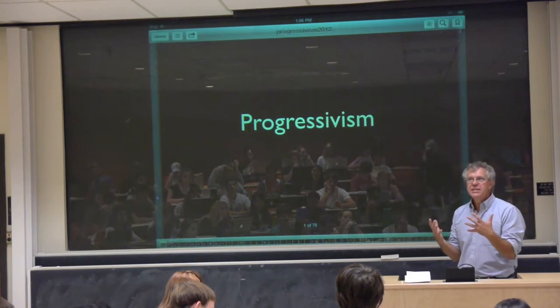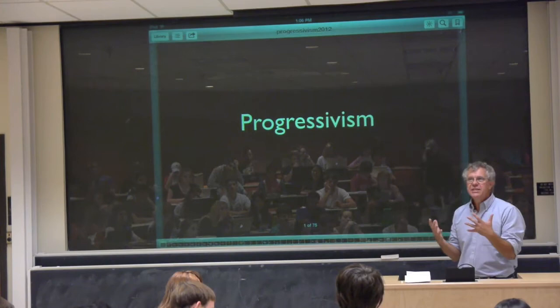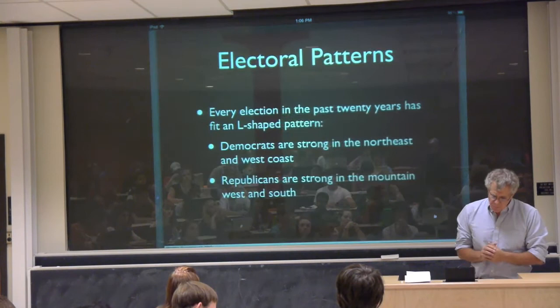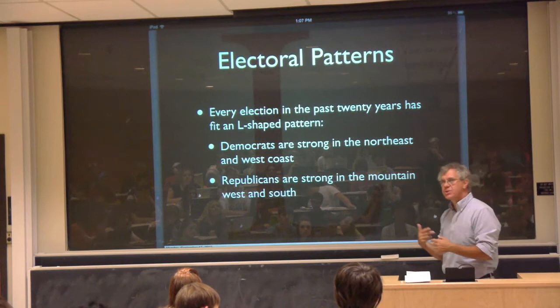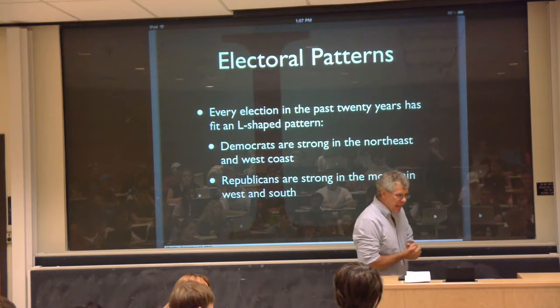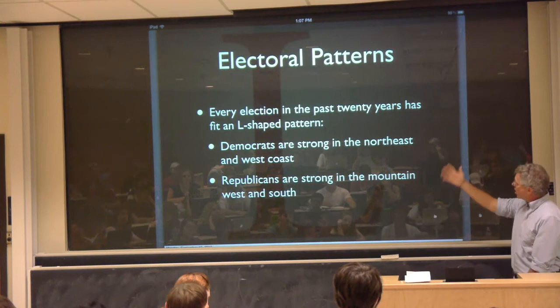We might begin by thinking about general patterns observed in American elections, really since the beginnings of the Republic. Every election in the past 20 years has fit a certain L-shaped pattern. The Democrats are strong in the Northeast and on the West Coast, while the Republicans are strong throughout the Mountain West and throughout the South — forming that L shape.